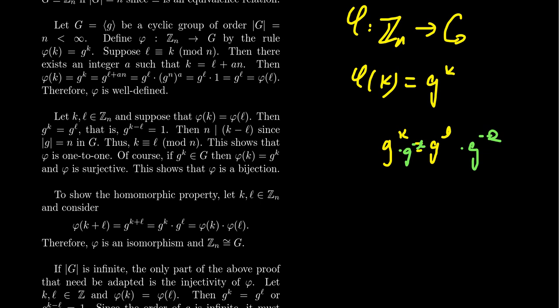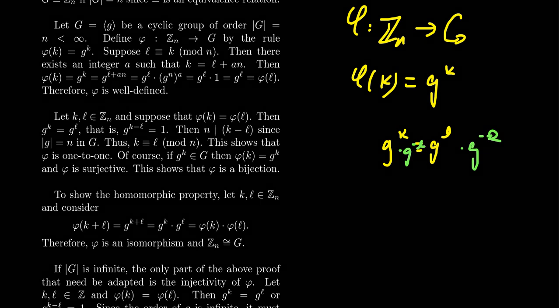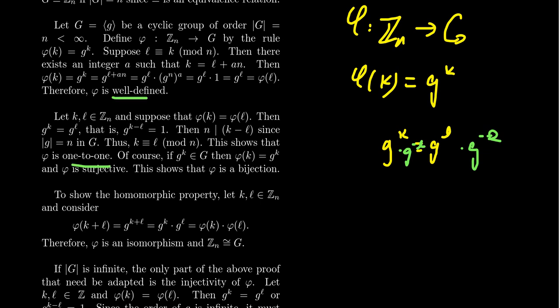To show that it's a bijection, so we have a one-to-one function now. Well-defined means it's a function, one-to-one we just proved. Let's show it's surjective. This is actually a very easy claim. Because elements of G will look like some power of little g. So if we take an arbitrary element, this would look like g to the k. Well, phi of k will map to g to the k, so surjectivity is easy. And so now we have a bijection.